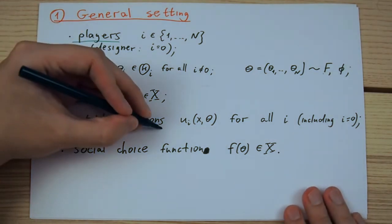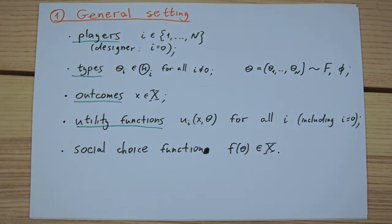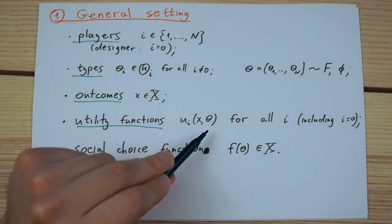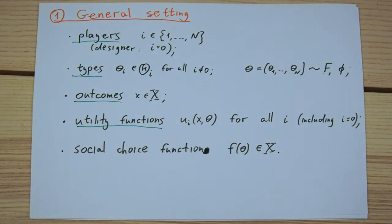The player's preferences are described by utility functions that depend on the outcome and on types. In principle, we allow the utility of player i to depend not only on their own type, but also on types of other players. This captures the case when player i does not fully know their preferences, but relevant information may be dispersed across other players.